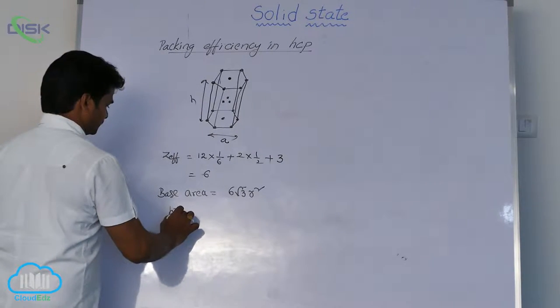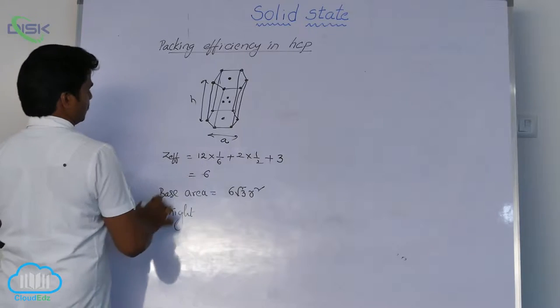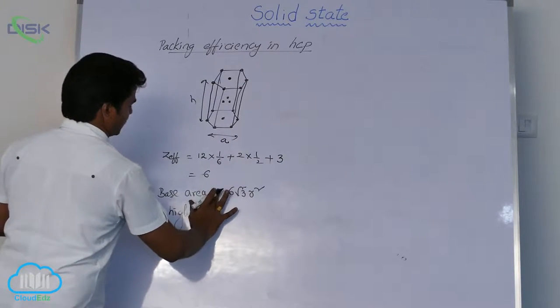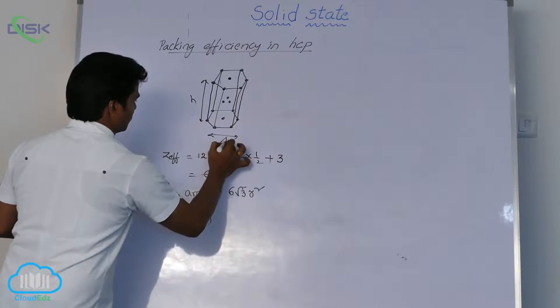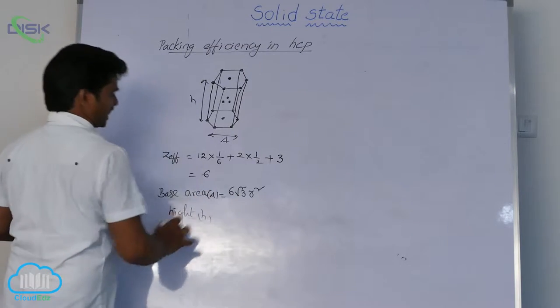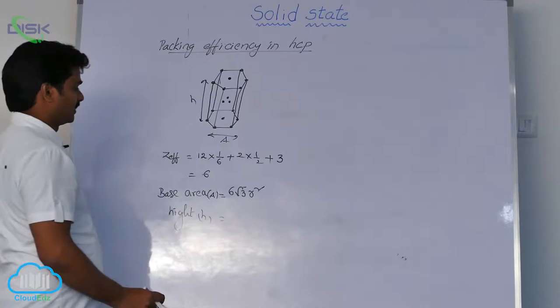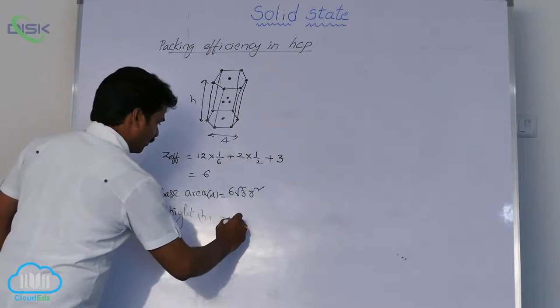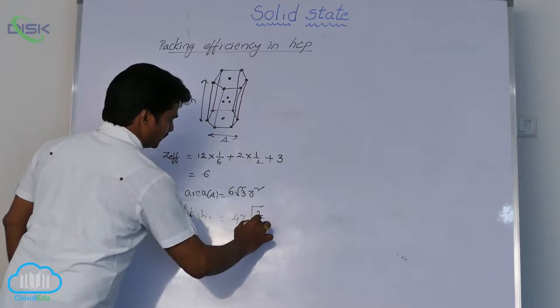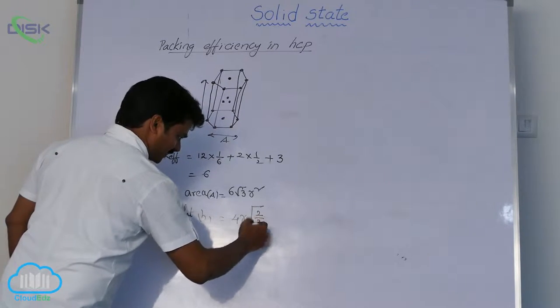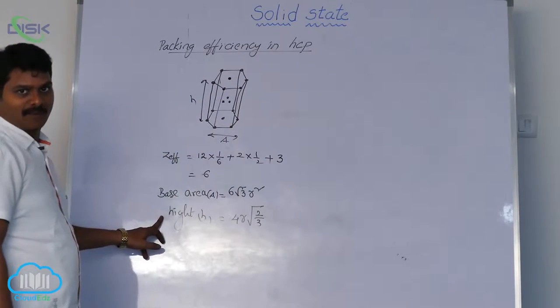Similarly, height. Let base area be capital A, 6 root 3 R square. So here we get the height formula, 4R under root 2 by 3. This is the height formula.